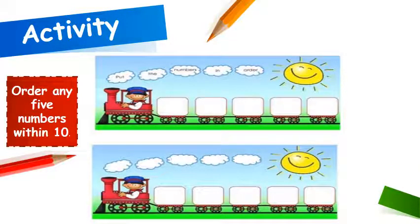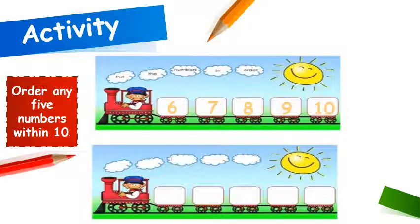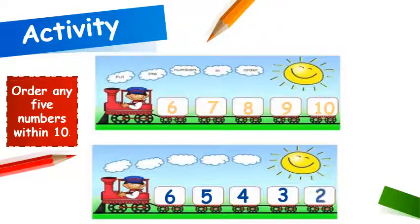Now it's activity time. You have to order any five numbers within ten — any number of your choice. I am choosing number six. Now how should I order? Should I count on or count back? Let's do both. First, counting on: after six there is seven, eight, nine, ten. And if I count back from six, I write five, then four, three, two. I have done my job — very well. And I hope you will do your job very well as well.